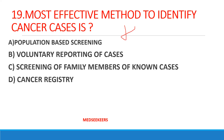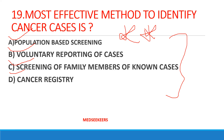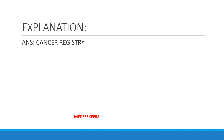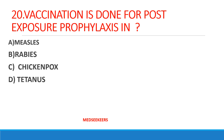Most effective method to identify cancer cases is — option A: population-based screening; option B: voluntary reporting of cases; option C: screening of family members of known cases; option D: cancer registry. Here the question is not about diagnosing cancer, but about identifying existing cancer cases for a study. The correct answer is cancer registry — it is the most effective method.